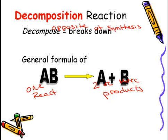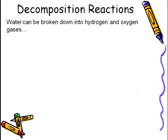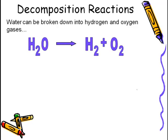Our general equation is AB yields A plus B. When we think about decomposition reactions, we'd say something like water, H2O, can be broken down into hydrogen and oxygen. Here we have our one reactant, and product 1, product 2.